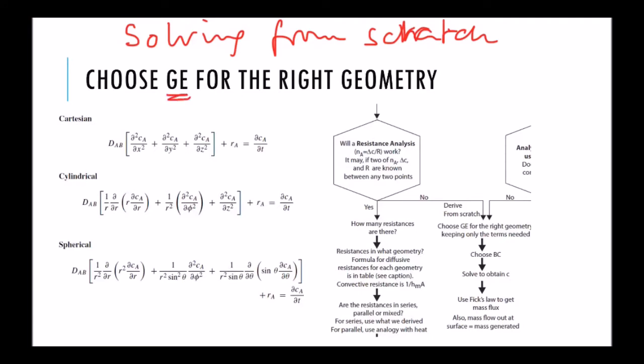We need to choose the governing equation. Notice that we have done governing equations for three different coordinate systems, and for each coordinate system the governing equation has many terms. We need to keep only the terms we need. Now this one, it is given that it's a cylindrical coordinate system.